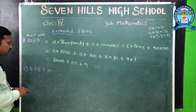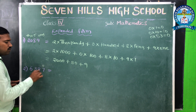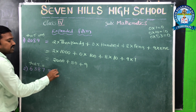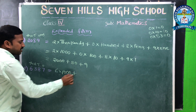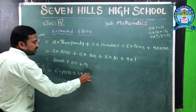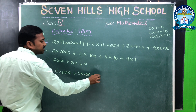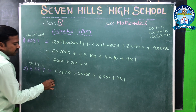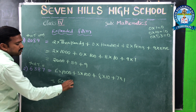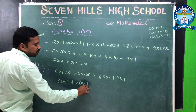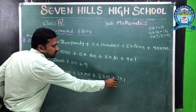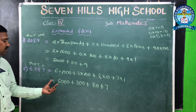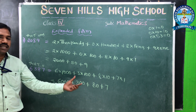Another example: 6387. 7 is in the ones place, 8 is in the tens place, 3 is in the hundreds place, 6 is in the thousands place. So: 6 × 1000 + 3 × 100 + 8 × 10 + 7 × 1 = 6000 + 300 + 80 + 7. The expanded form of 6387 is 6000 + 300 + 80 + 7.